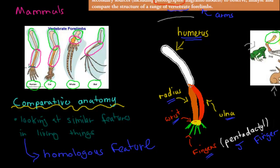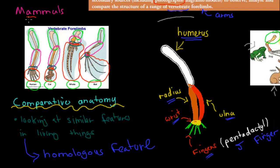Next is the wrist — present in the human, the cat, the whale, and the bat. Each mammal has that same wrist. And then the five fingers: five fingers for the human, five for the cat, five for the whale, and five for the bat. So the bat and the whale are also pentadactyl animals — they have five fingers. You can see that all mammals, as a class, have very similar structures — they all have homologous features in terms of their arms. The arm is a homologous feature, meaning their arm structures are very similar.